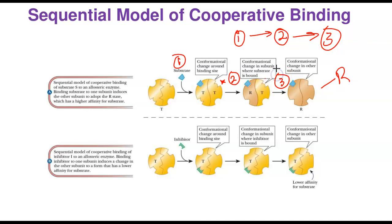When the inhibitor binds in the sequential model — a case of negative cooperativity — it induces a conformational change in its own site, then around the adjacent subunit, converting the enzyme to a conformation with no affinity for any substrate. So in the sequential model, the conformational change happens in sequence: binding changes its site, changes adjacent conformations, and ultimately ensures the inhibitor cannot bind further, shutting down catalysis.